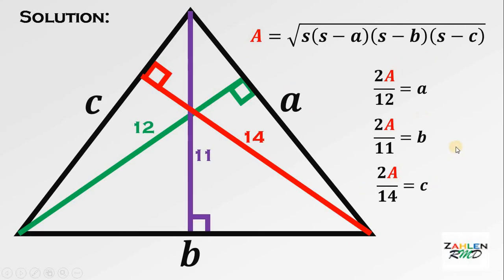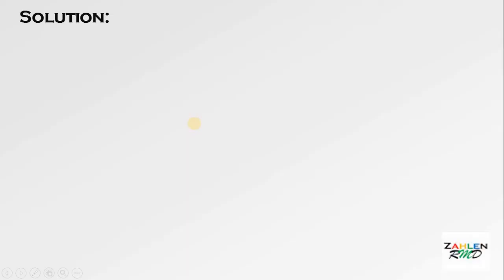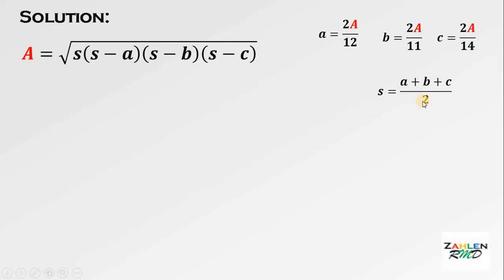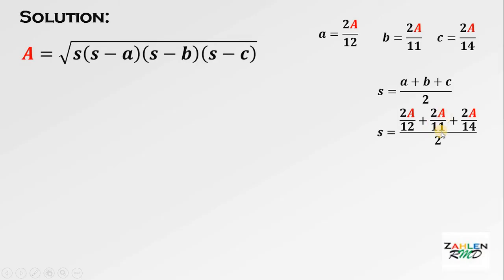Using the expressions for A, B, and C, we can now find the area. First, we solve for S, the semi-perimeter: S equals (A plus B plus C) divided by 2. Substituting the values, we get (2·Area/12 + 2·Area/11 + 2·Area/14) divided by 2. Simplifying, this gives us 227·Area over 924. Note that this 'Area' here is the area of the triangle. Since we now have S, A, B, and C, we can substitute all those values into Heron's formula.